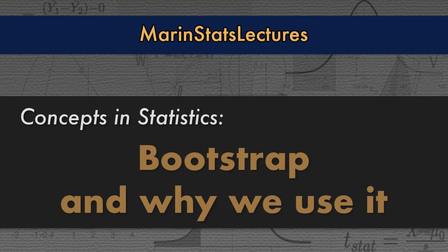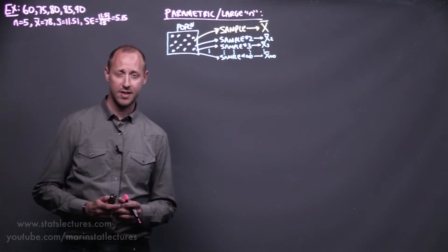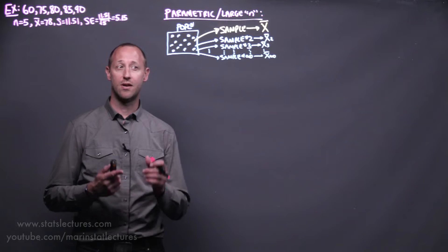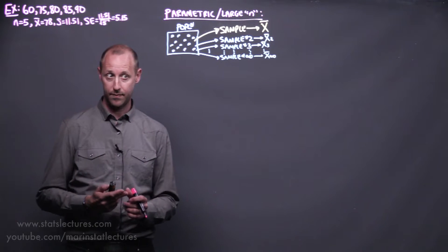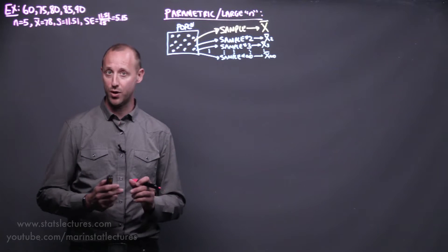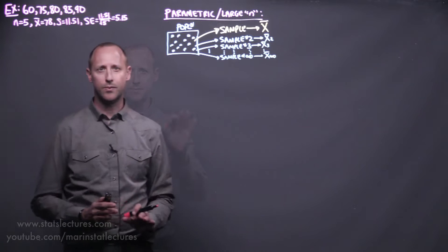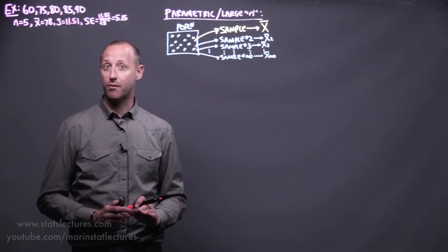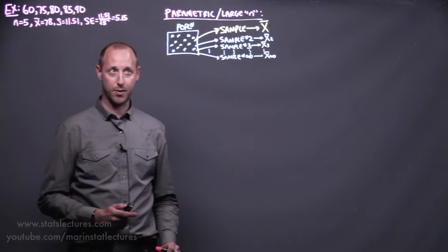We're going to talk a little bit about what is a bootstrap approach and why might we want to use that. When doing statistical inference, it generally relies on the sampling distribution as well as a standard error. We're going to do all this in the context of one numeric variable and estimating a mean. First, let's talk about what we've learned so far — this parametric approach, or sometimes called a large sample approach.